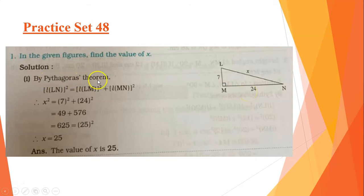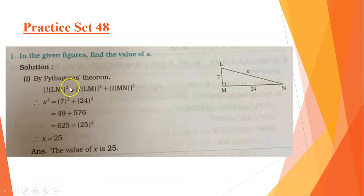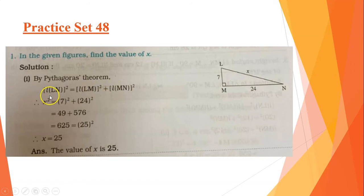By Pythagoras' Theorem, after we have written the given information, we write: by Pythagoras' Theorem, length LN squared is equal to length LM squared plus length MN squared. It is important to write the formula for Pythagoras' Theorem. In the next step, we are going to substitute the values given.